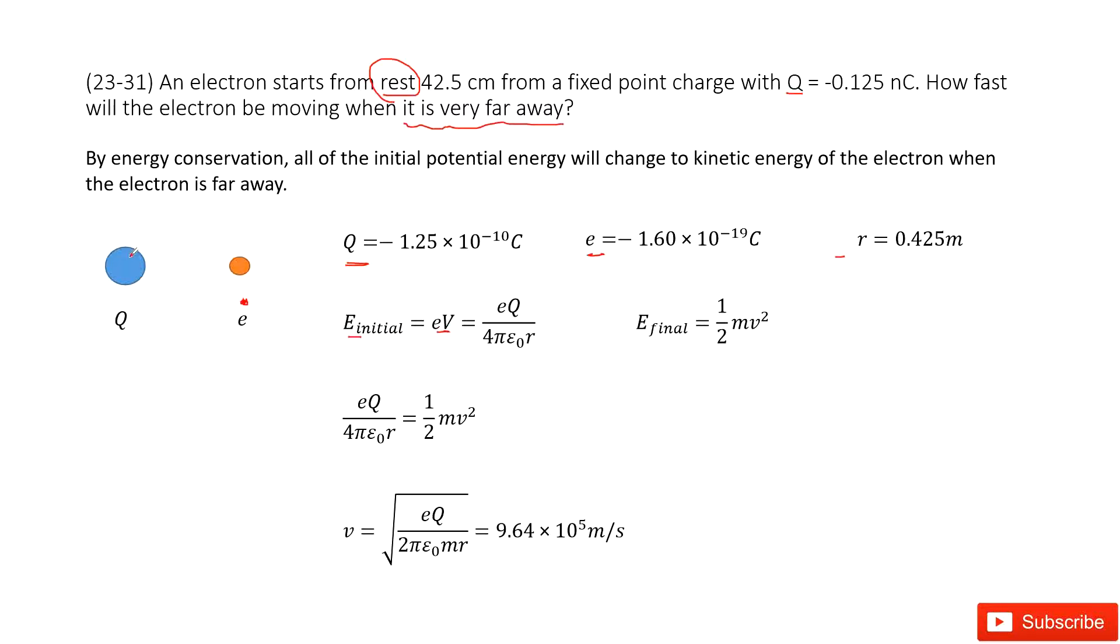As for final energy, we see this charge, the point charge is fixed, so it does not move. We don't consider the potential energy. So the final energy is just the kinetic energy of the electron: one-half mv squared. Initial energy equals final energy.